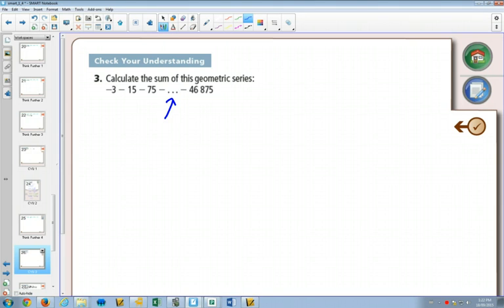What do we know? Well, it's geometric, so that means there's going to be an r value. Do we know what that r value is? Five. Five. We're multiplying by five.